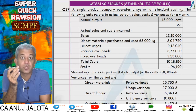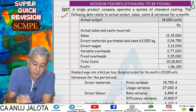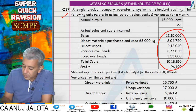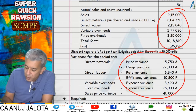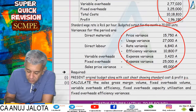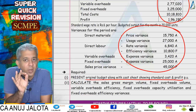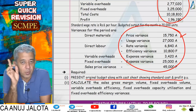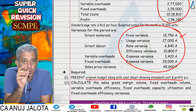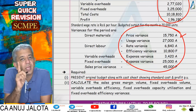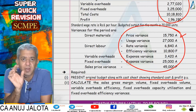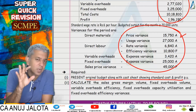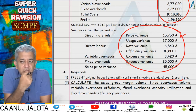We started with questions on missing figures. In this series, you have actual data and variances, and you need to find the standard data. The objective in all such questions is: think about which variance is given, recall its formula, identify what data you have, and if there is only one missing figure, use that variance to find it. Slowly the things will start to unfold.